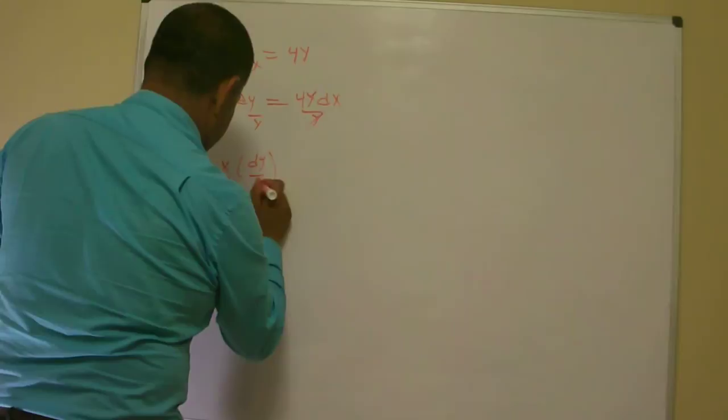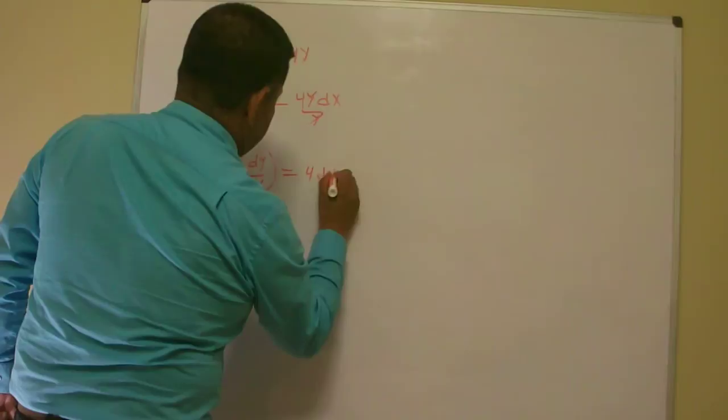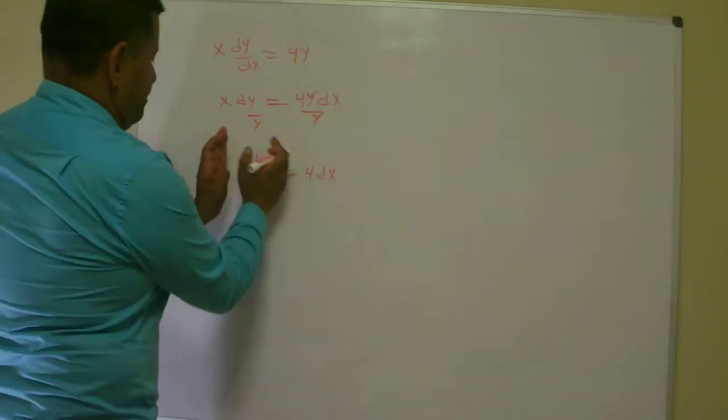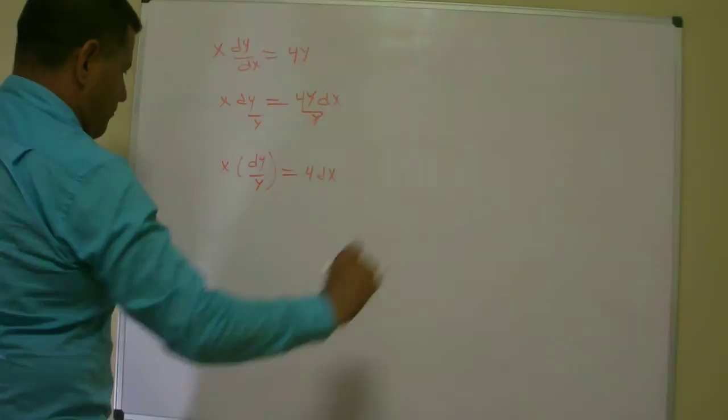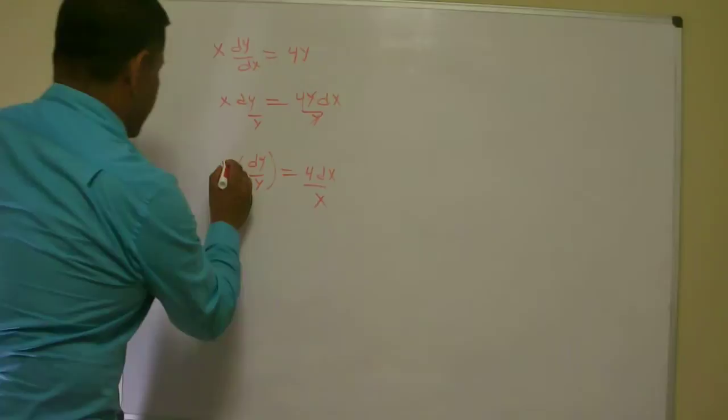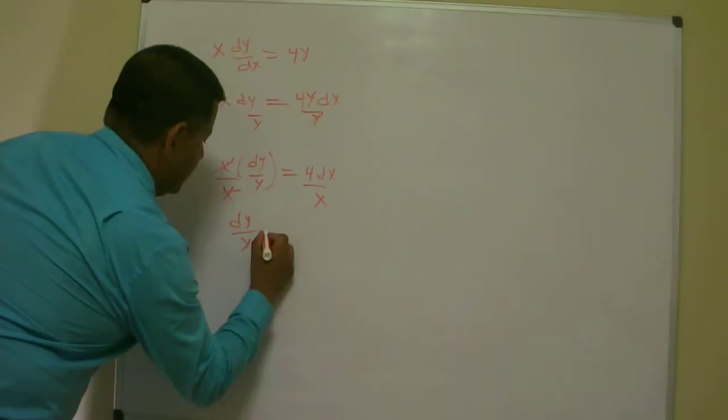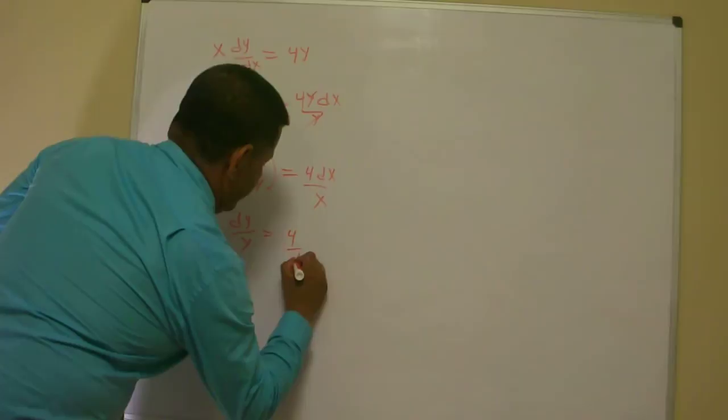Notice that I put parenthesis right here so it kind of helped me that this piece right here belongs to the dx, whatever is in the bottom here is kind of one whole piece. Now I am going to divide both sides by x, and when I do that, this x cancels out and I get dy over y equals 4 over x dx.